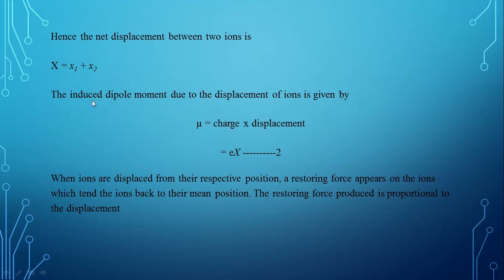The induced dipole moment due to the displacement of the ion is given by charge into displacement. Here, the charge of the ion is taken as small e and the total displacement is capital X.